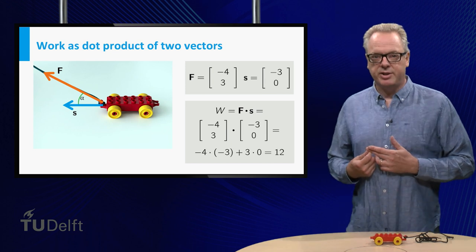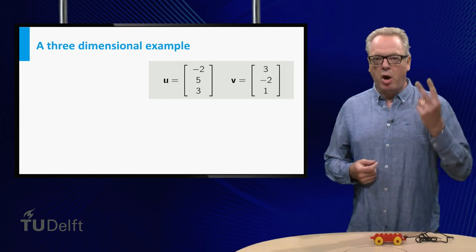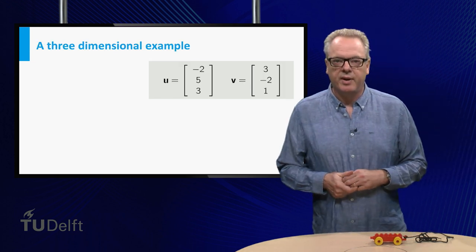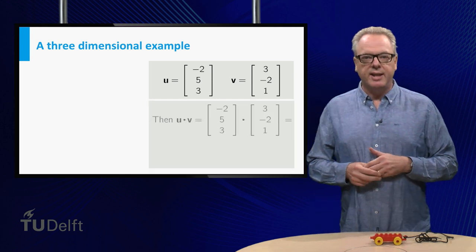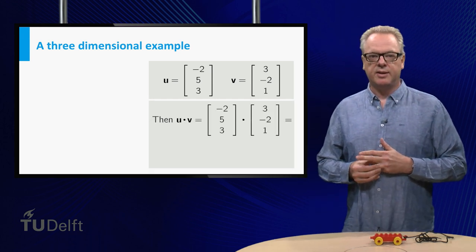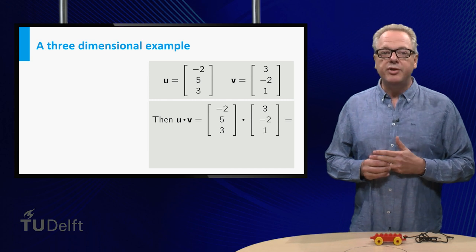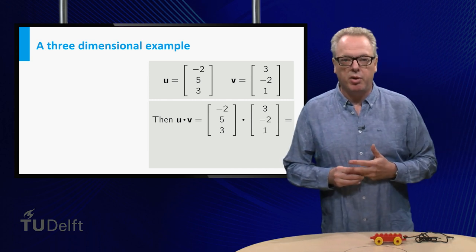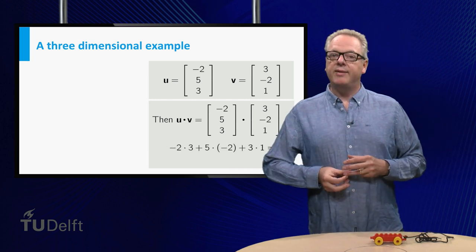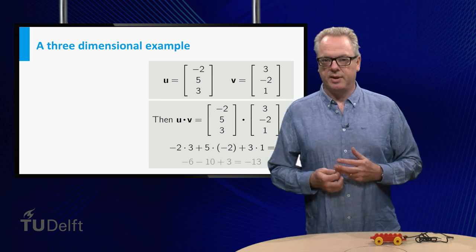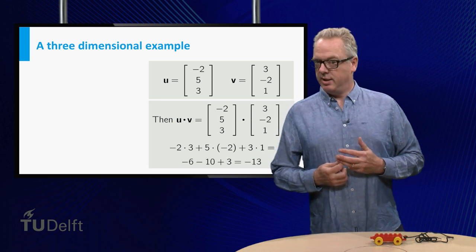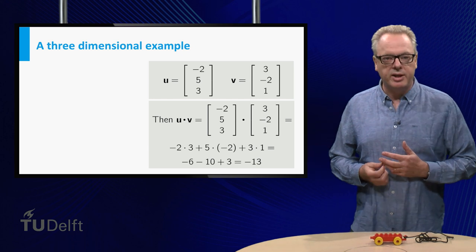And now the three-dimensional case. Suppose two vectors are given. The dot product is then easily calculated. Again, multiply the corresponding components and add the results. In this case, the answer is minus 13.